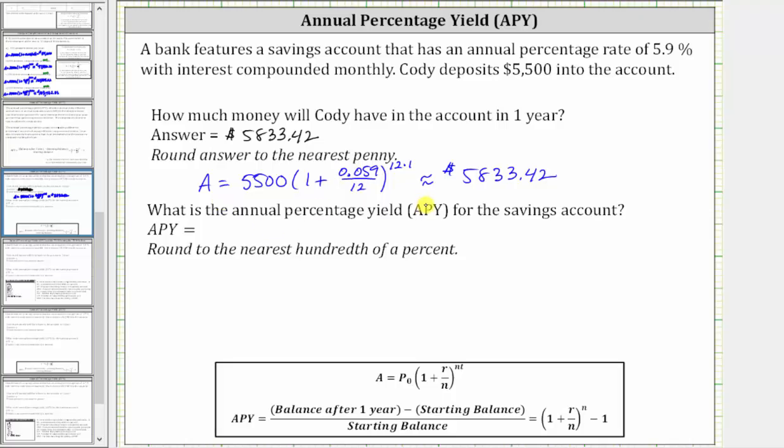And now we'll determine the APY using both formulas. For this first formula, we have the balance after one year minus the starting balance, all divided by the starting balance. Notice how this first formula does require the balance after one year, which we already have. So the APY is equal to the balance after one year, which is $5,833.42, minus the starting balance of $5,500, and this difference is divided by the starting balance of $5,500.